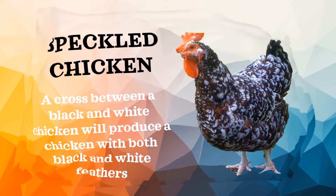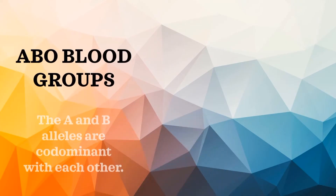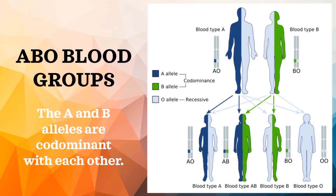Another example of co-dominance is the ABO blood type. The A and B alleles are co-dominant with each other. When a person has both antigen A and antigen B, they will have blood type AB.